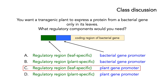What we wanted is to express this protein only in the leaves of the plant, so it's not surprising that you use a leaf-specific regulatory region — that rules out B and D. But why do you use a plant gene promoter and not a bacterial gene promoter? The gene promoter is effectively a switch. In order to turn the expression of a particular gene on in a plant, you need the plant switch — the switch that the plant will recognize. If you have a switch that recognizes bacteria, when you put it into the plant, the plant won't recognize it and it won't work. So you need a regulatory region that is leaf-specific and a plant gene promoter.